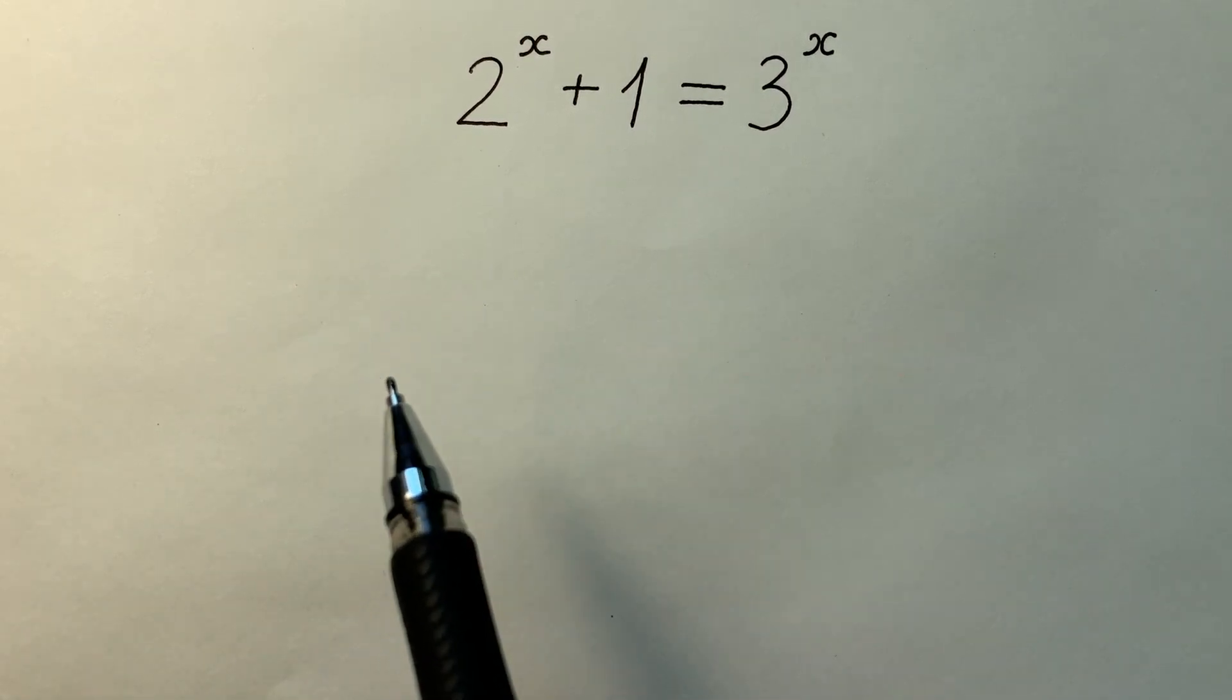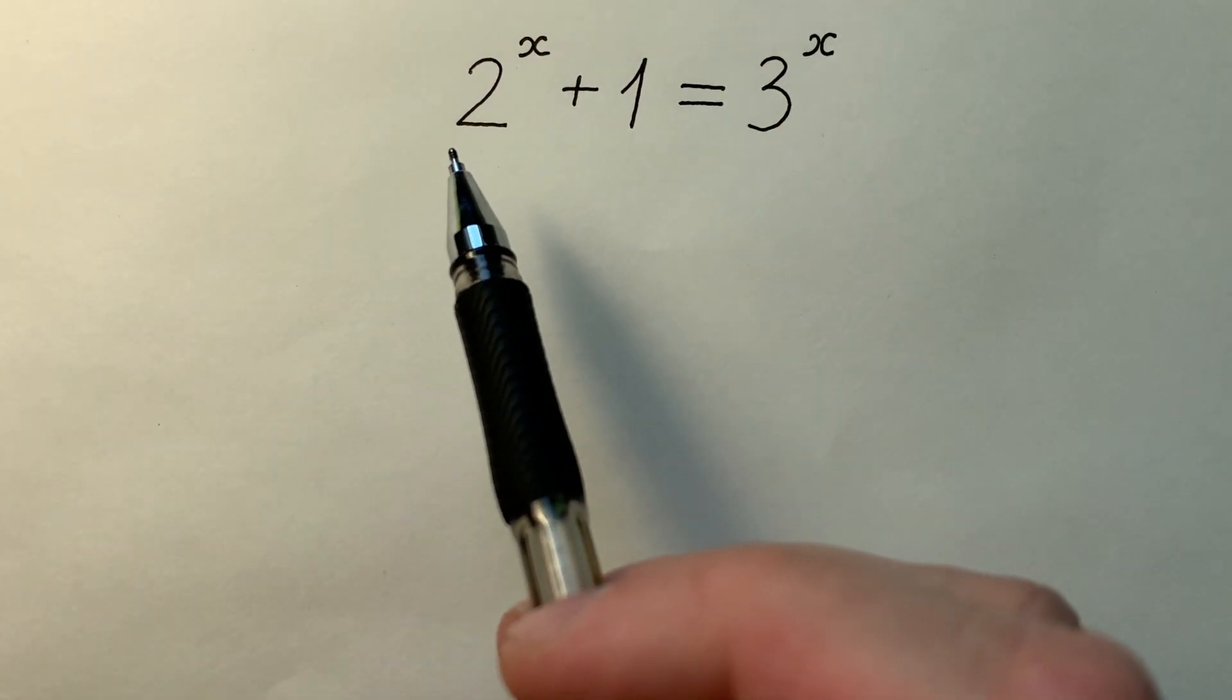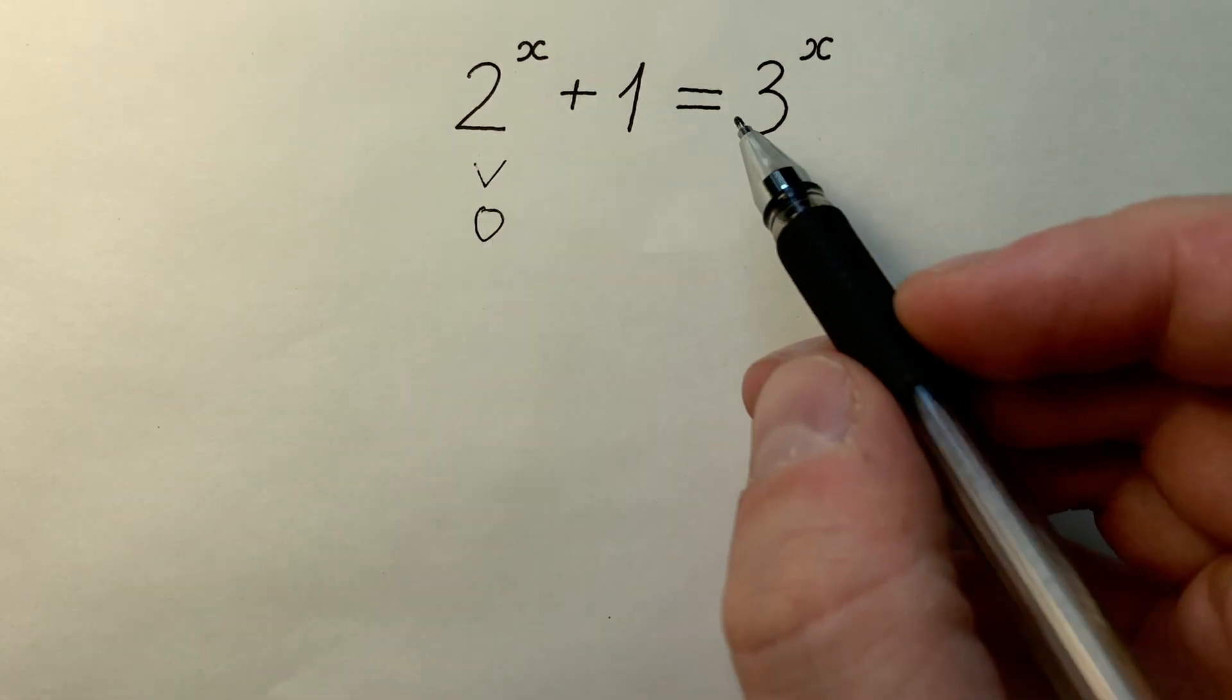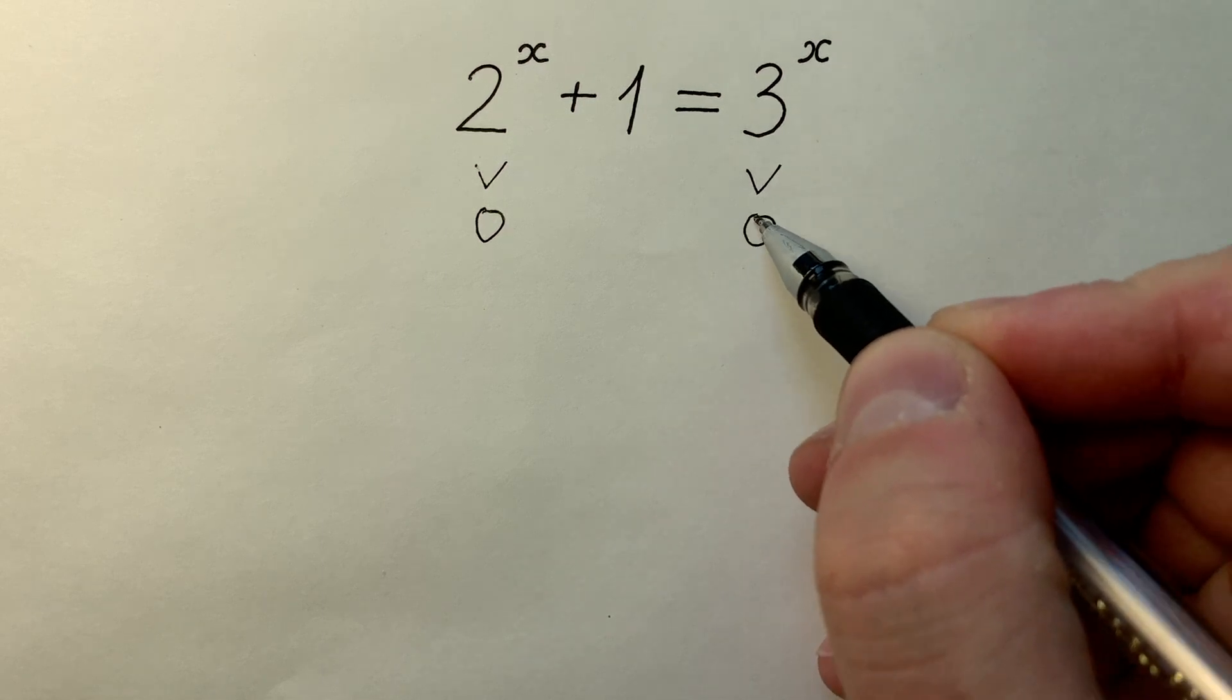At first, let's take a look. We see that 2 to the power of x is bigger than 0, and 3 to the power of x is also bigger than 0.